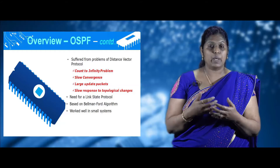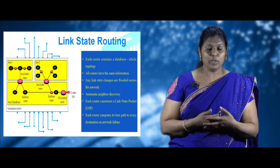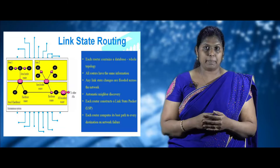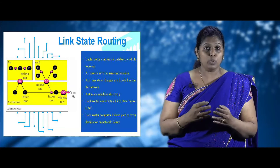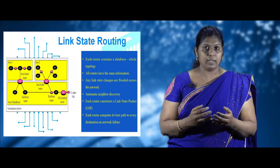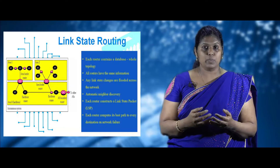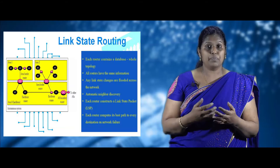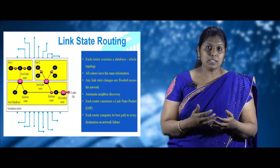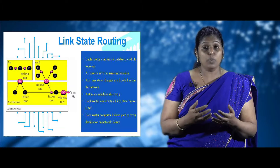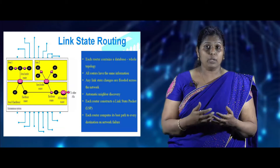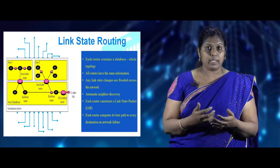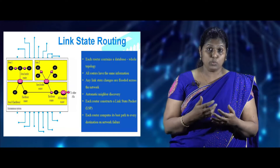The distance vector protocol uses the Bellman-Ford algorithm and is well defined to work in smaller systems. In link state routing, each router maintains a database containing information about the whole topology — the links and their corresponding states. All routers contain the same information. If there are any changes in the link states, those are flooded across the network. This routing constructs its own best path to every destination upon network failures, and also constructs link state packets called LSPs, which are used for routing.